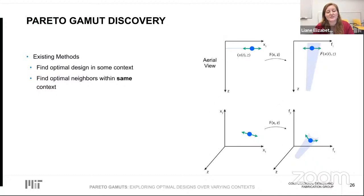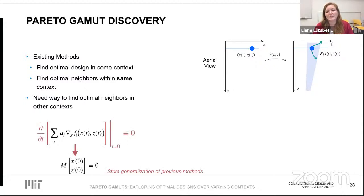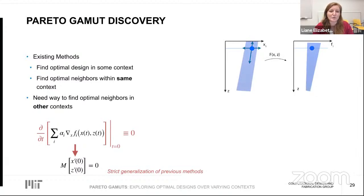To discover the full gamut, we generalize the expansion step to move across contexts as well. We do this by modifying the KKT conditions slightly to reflect that contexts can't be treated the same as design variables. Then everything mostly proceeds as before. Now our perturbation directions give us a way to move not only within a fixed design space (x'), but also across contexts (z' components). The subspace spanned by all satisfying directions defines an entire patch of the Pareto gamut.